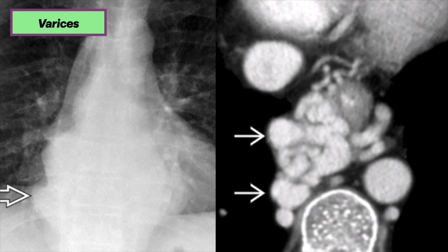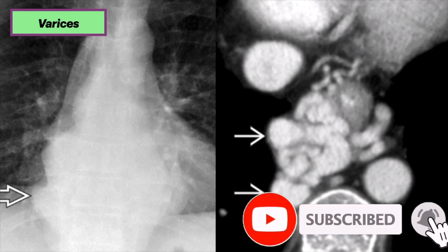Our last case is one of varices. The chest X-ray of a patient with alcoholic cirrhosis shows lobulated masses near the gastroesophageal junction with lateral displacement of the azagoesophageal recess. The contour abnormality of the lower azagoesophageal recess is the most common radiographic finding of paraesophageal varices. Axial CT shows multiple dilated, enhancing paraesophageal varices to the right of the esophagus in the region of the azagoesophageal recess and surrounding the distal esophagus.